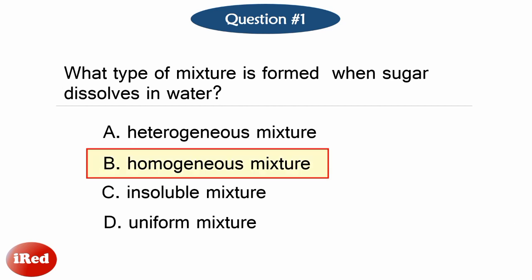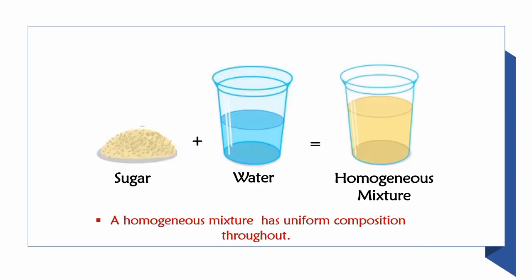The correct answer is letter B: Homogeneous mixture. When you mix sugar and water, the sugar will dissolve into the water. The mixture of sugar and water is uniform in composition throughout, and there is only one phase of matter observed.